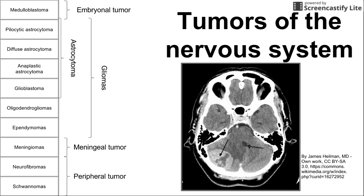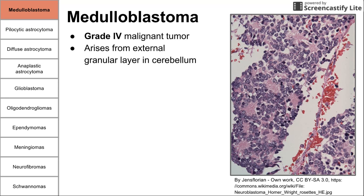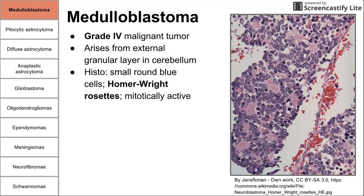Let's begin with medulloblastoma. This is an embryonal tumor and one of the higher grade tumors — a grade four malignant tumor on the WHO scale. It arises from the external granular layer in the cerebellum, coming from embryonal tissue. On histology, we see small, round, blue cells. We see Homer Wright rosettes, which can be seen in the histology on the right, and the cells are often mitotically active, so you might see them dividing.